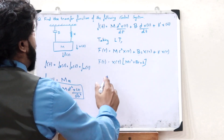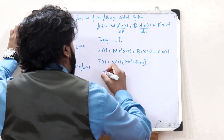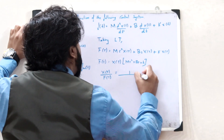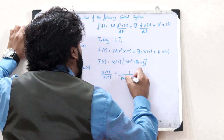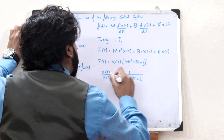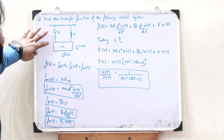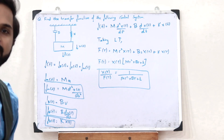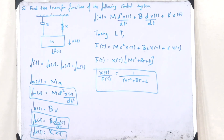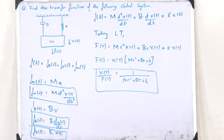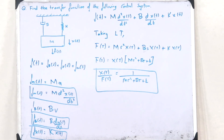Taking X(S) divided by F(S), we get X(S)/F(S) = 1/(MS² + BS + K). This is the required transfer function of this particular control system. This is a basic example of how you would find the transfer function of a mechanical control system undergoing translational motion.